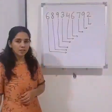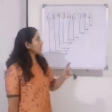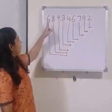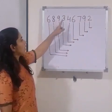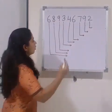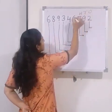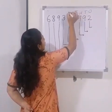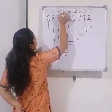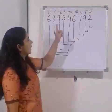We will see with the help of an example how to put numbers in the place value chart and find the place value of each digit. The number is 689,346,792. Placing it: 2 is at ones place, 9 at tens, 7 at hundreds, 6 at thousands, 4 at ten-thousands, 3 at lakhs, 9 at ten-lakhs, 8 at crores, and 6 at ten-crores.